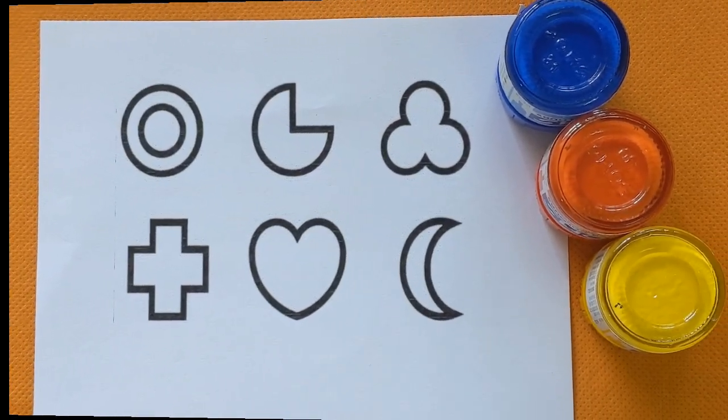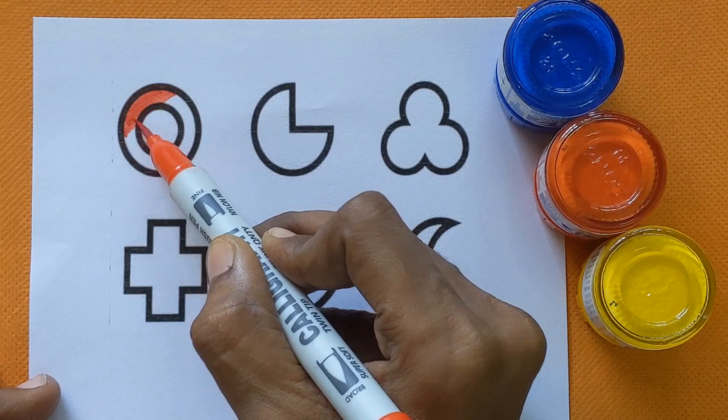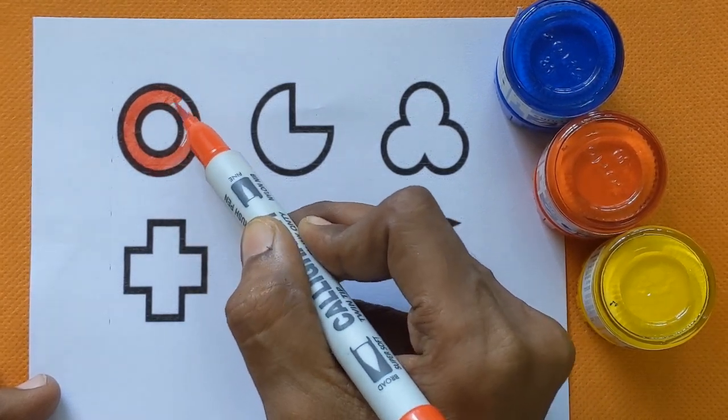Now let's color the shapes. Which shape is this, kids? This is donut shape with a red color.